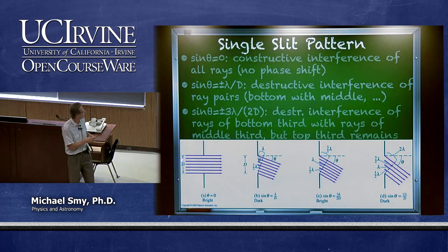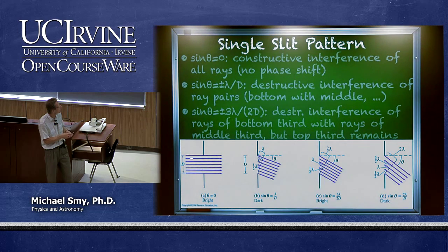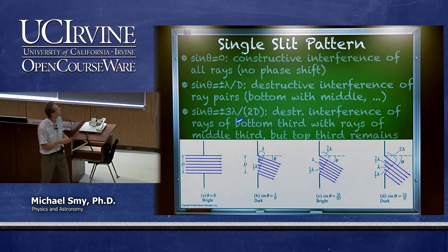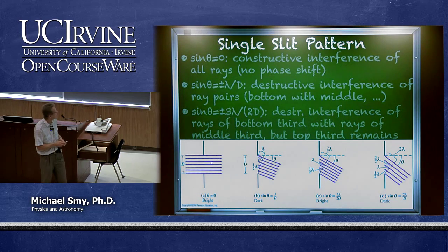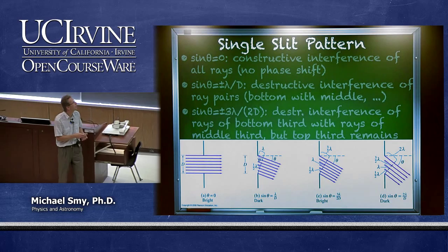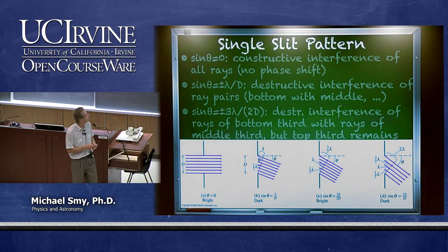If the light impinging has no angle with respect to the normal, then all of those Huygens waves are in phase, and the wave pretty much goes through without destructive interference. So for sine theta equal to zero — where theta is the angle with respect to the normal — there is a maximum, meaning only constructive interference of all the rays and no phase shift.